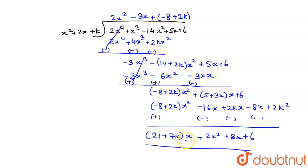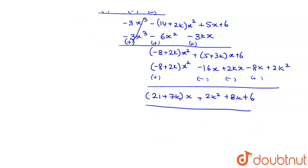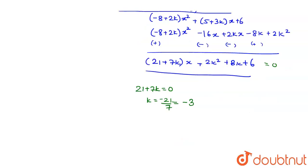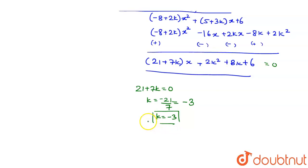Since g(x) is a factor of p(x), the remainder must equal zero. So 21 + 7k = 0, giving k = -21/7 = -3. Therefore k = -3.